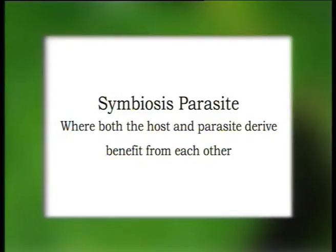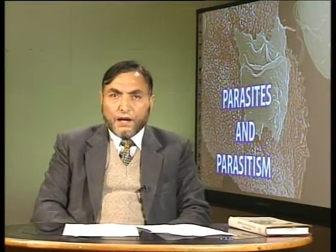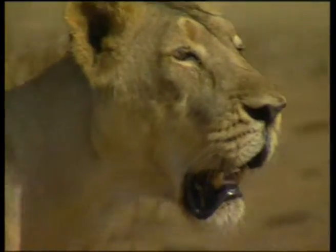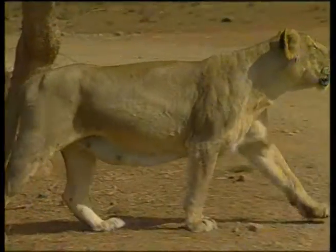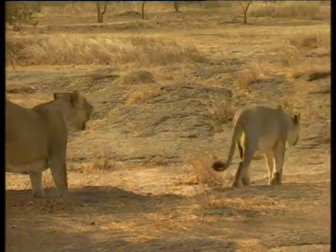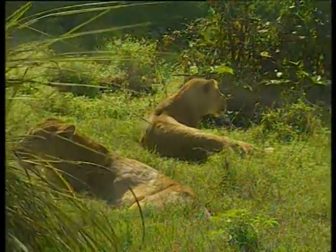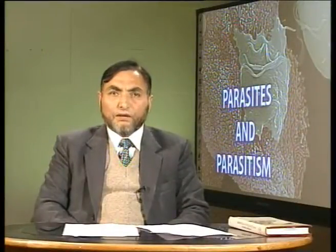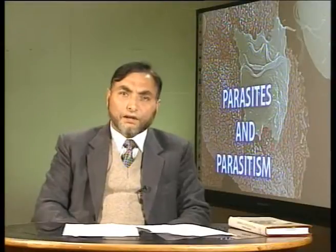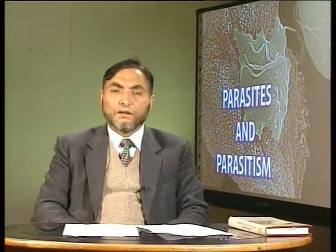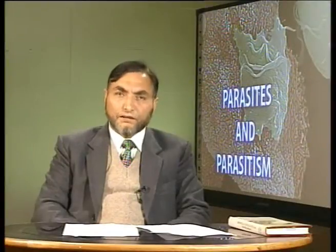We also have another type of parasitism called symbiosis, wherein both the parasite as well as the host derive benefit from each other. Then we have predators which eat up their host at one time, like what a lion does in the jungle. These parasites vary from microscopic size to as large as 10 to 15 meters in size.